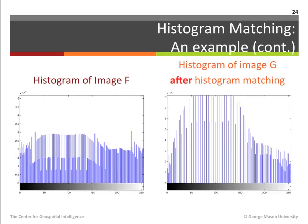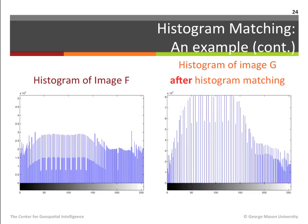Let us now examine the histogram of image G after applying the histogram matching process, shown on the right. Compare this histogram to the histogram of image F shown on the left. As mentioned before, the matching process does not guarantee that the two histograms would be identical. However, the two histograms do share similar trends in terms of their overall shape and in terms of the distribution of the number of pixels throughout the dynamic range. This overall similarity results in an image that is visually very similar to image F.